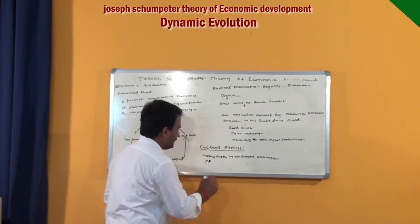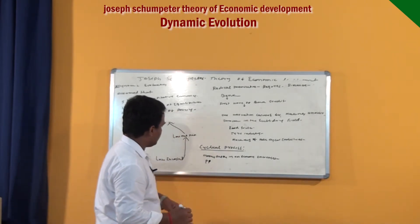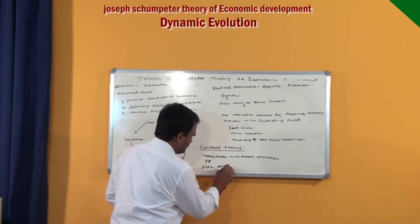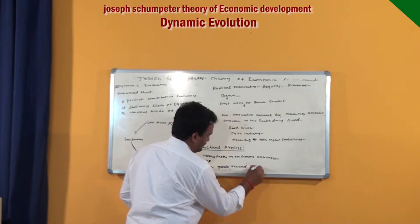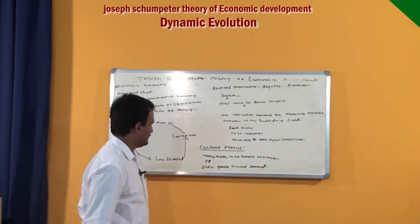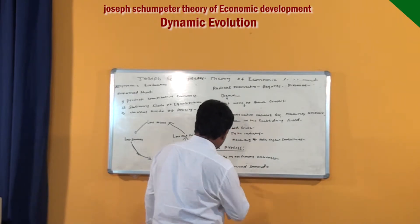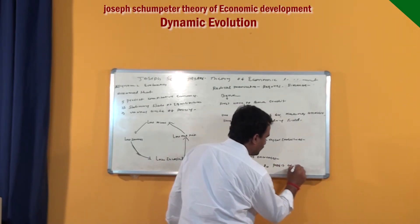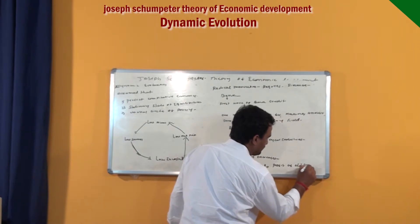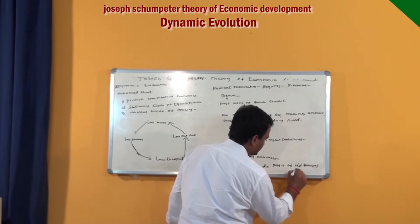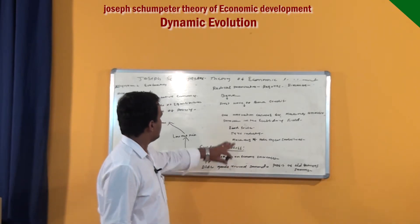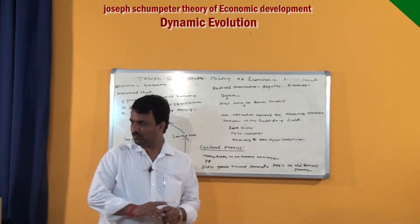Automatically, unemployed people gain purchasing power, and as a result older goods receive demand. When older goods receive demand, older factories see their profits increase. To make more profit, old industrialists take loans from the bank — that is called the second wave of bank credit.